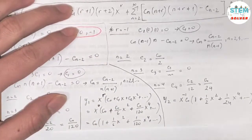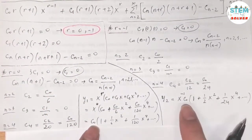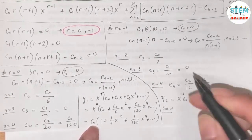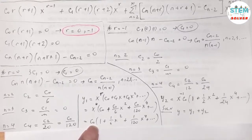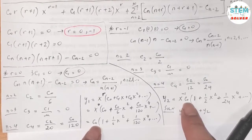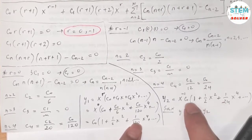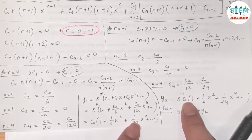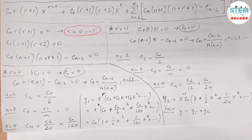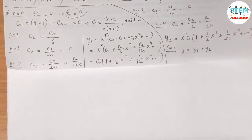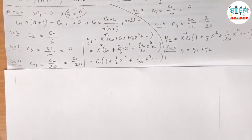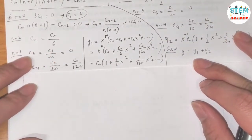Now we have y_1 from r=0 and y_2 from r=-1. The final general solution is y equals y_1 plus y_2. Keep in mind the c_0 in y_1 and the c_0 in y_2 are independent arbitrary constants — relabel one as c_1 so they are distinct.